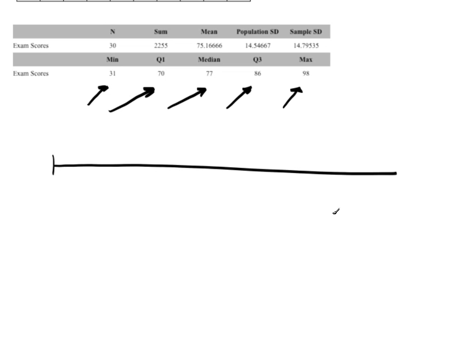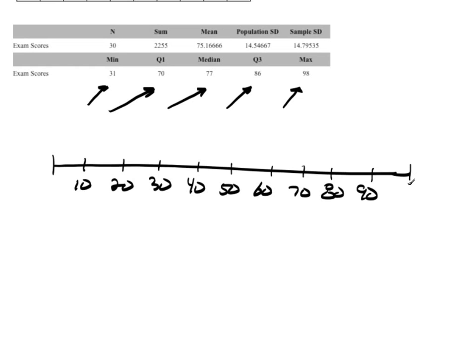If I'm doing this box and whisker plot by hand, the first thing I need to do is make sure I have a scale that is reasonably proportioned, so I'll go with 10, 20, 30, 40, 50, 60, 70, 80, 90, and 100. The minimum is 31, so that would be right about here, and I'm going to put a little dot above the line. Q1 is 70, the median is 77, and Q3 is 86 — about there — and the max is 98.